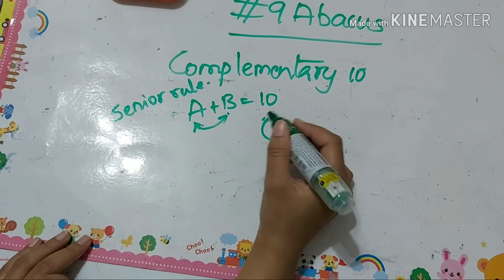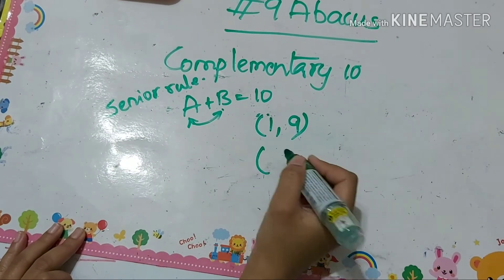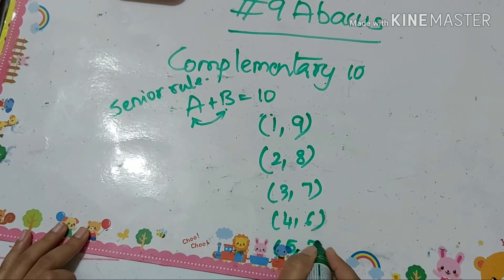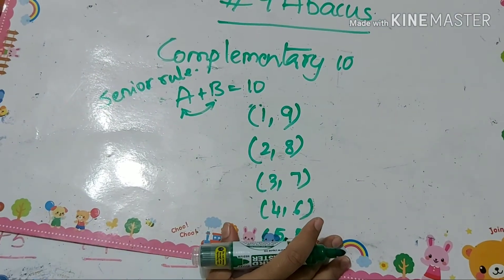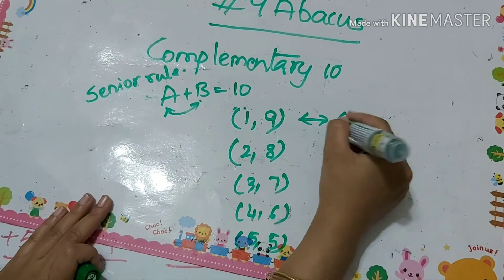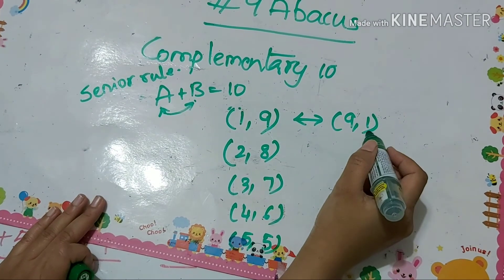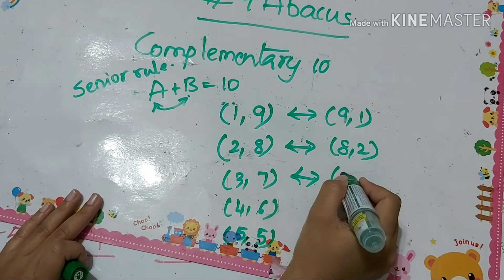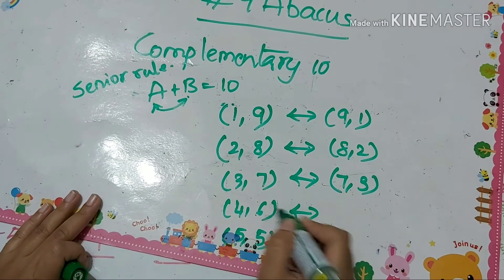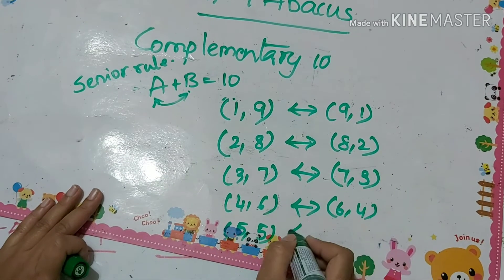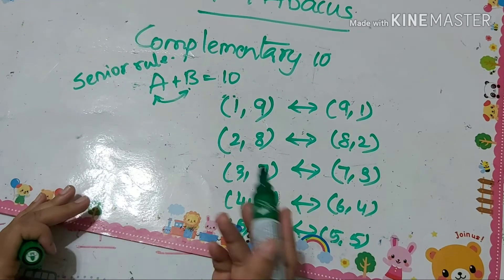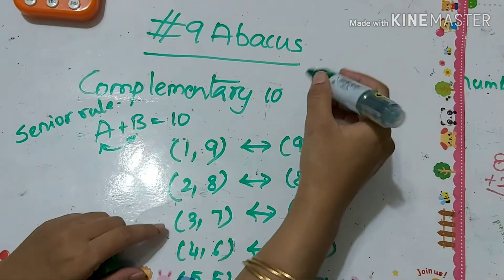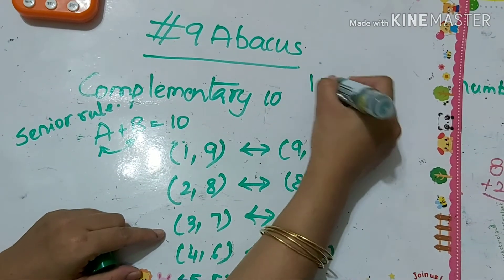Starting from the first pair: 1 and 9, then 2 and 8, then 3 and 7 — these are the pairs whose sum is 10. The full set of pairs is: 1-9, 2-8, 3-7, 4-6, and 5-5. We can also take the vice versa: if 1 is the big friend of 9 then 9 is the big friend of 1; if 2's big friend is 8 then 8's big friend is 2, and so on for 3-7, 6-4, 5-5. Using all these pairs we will derive formulas in the senior friend method — 18 formulas in total.